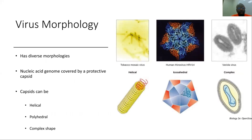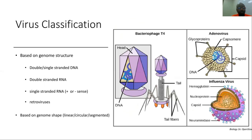Because viruses have diverse morphologies, it is difficult to define their shape. However, all viruses share one thing: they contain one nucleic acid protected by a capsid. Based on capsid shape, viruses can be helical (e.g., tobacco mosaic virus), icosahedral (e.g., rhinovirus), or complex (e.g., variola virus). Based on genomic structure, viruses can have double or single stranded DNA, double stranded RNA, single stranded RNA in positive or negative sense, or be retroviruses.